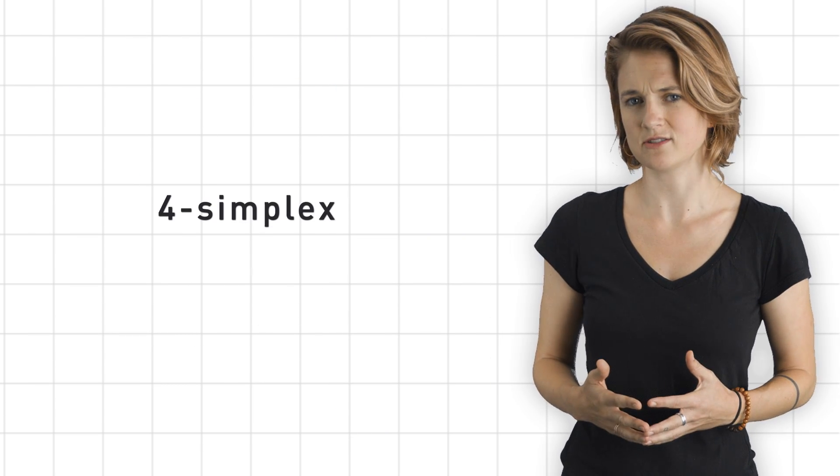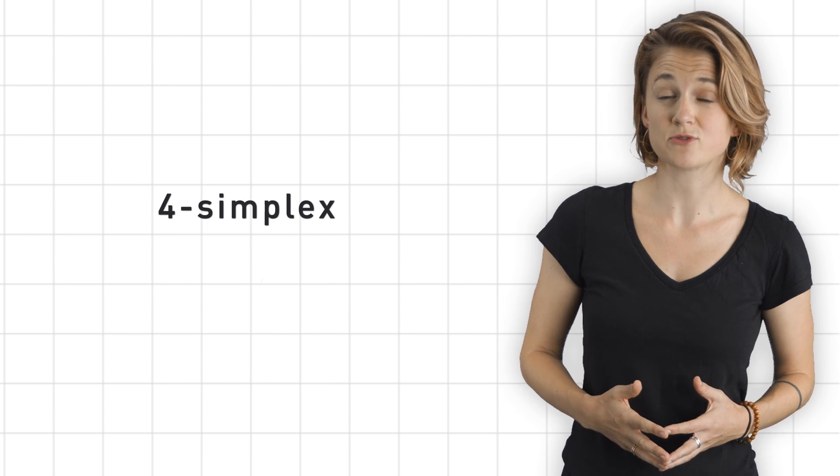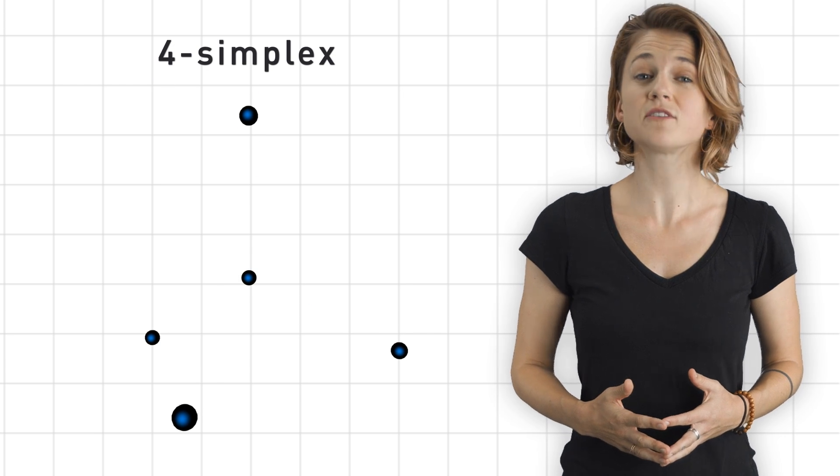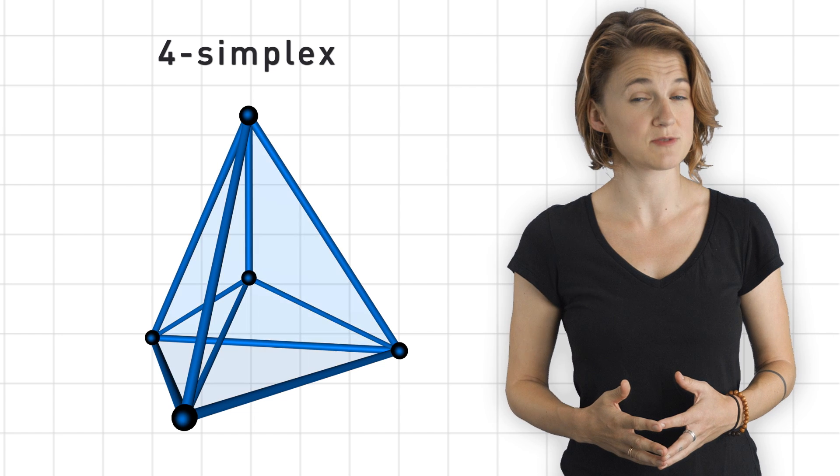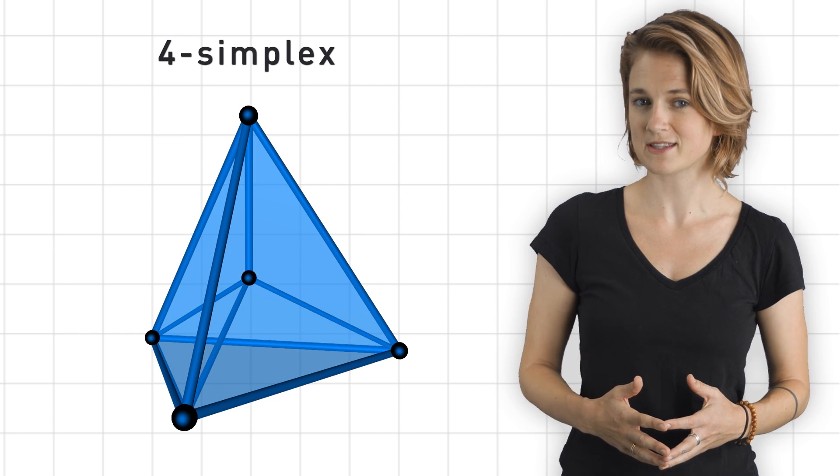Let's try it in four dimensions. To build a four simplex, you start with five vertices. You then fill in the one dimensional edges between the vertices, the two dimensional faces between the edges,